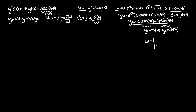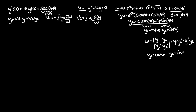The Wronskian in linear algebra is used to find out whether two functions are linearly independent, so we need to find the derivatives of y1 and y2. The Wronskian is the determinant: y1 y2 prime minus y1 prime y2. Here y1 is cosine 4t and y2 is sine 4t. Taking derivatives: y1 prime is negative 4 sine 4t, and y2 prime is 4 cosine 4t. Plugging into the Wronskian: cosine 4t times 4 cosine 4t minus negative 4 sine 4t times sine 4t.